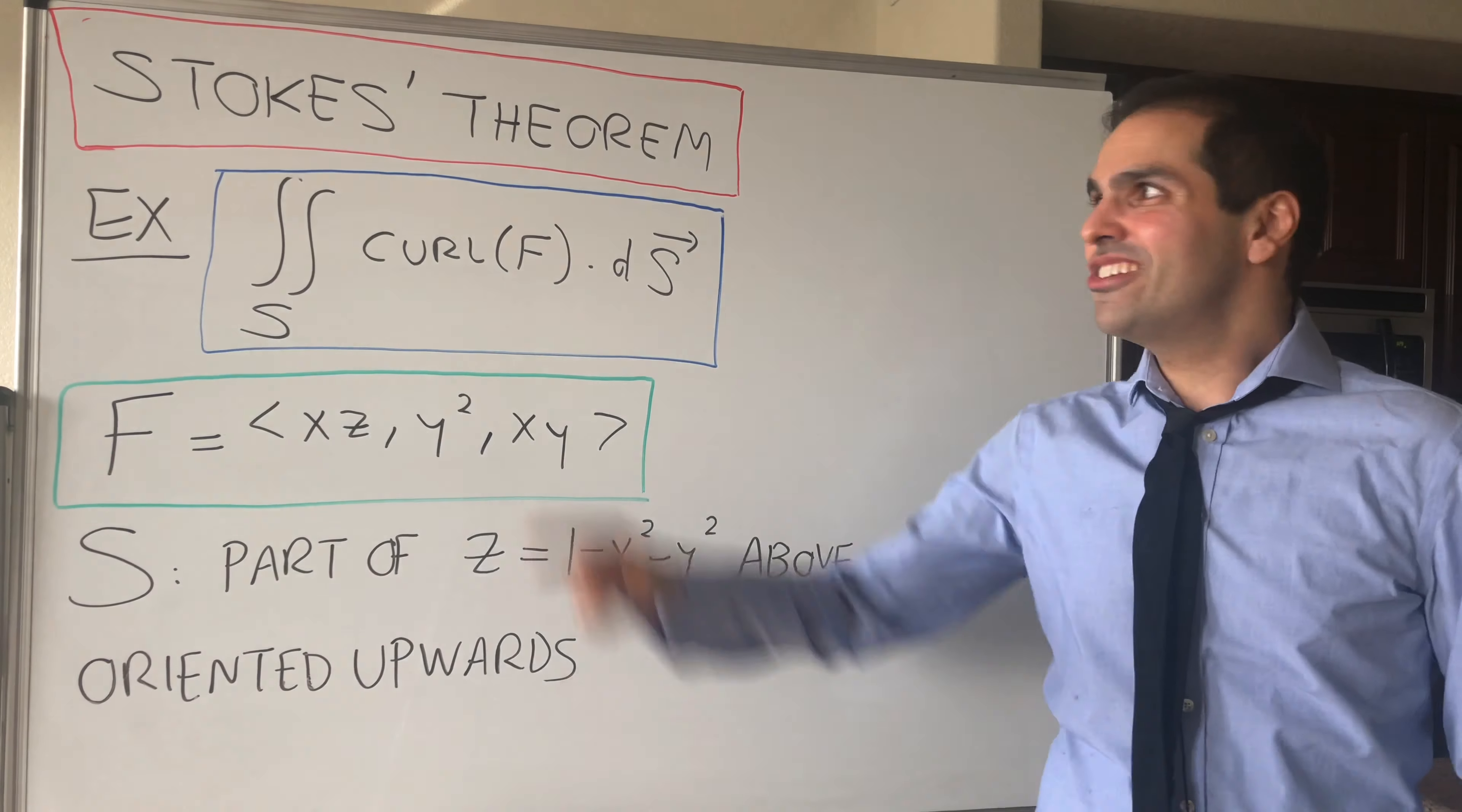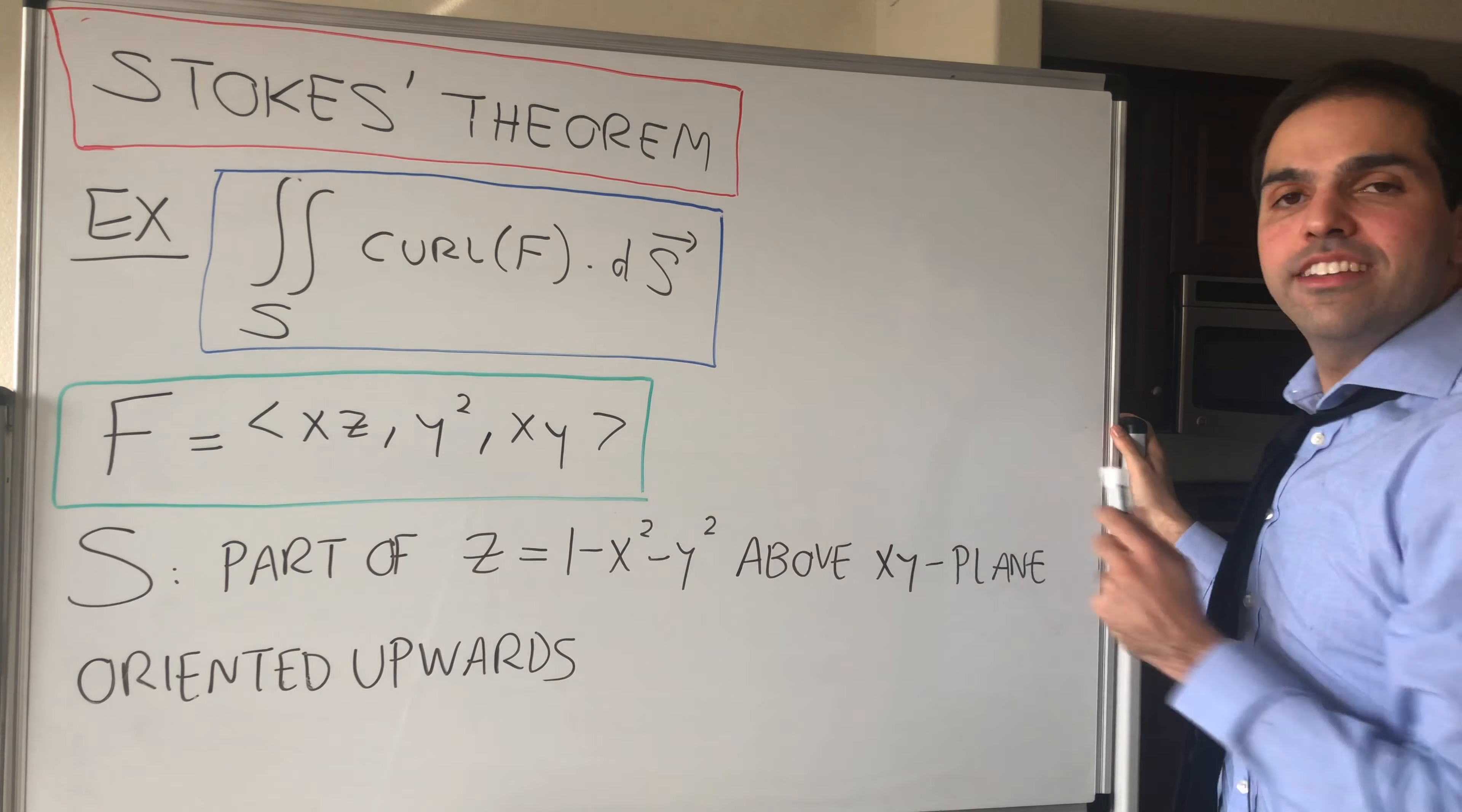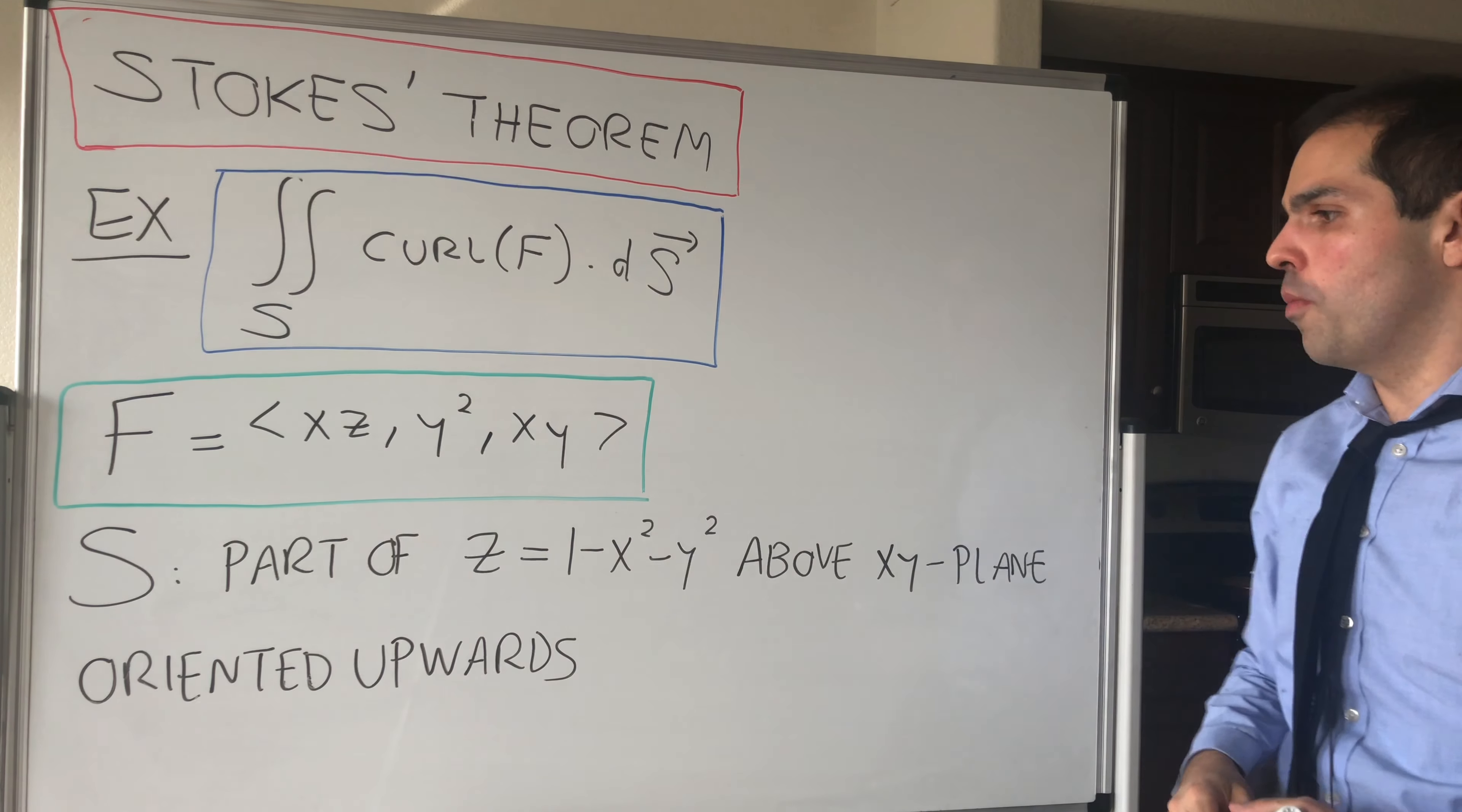All right, let's get stoked for Stokes' Theorem. In particular today, let's calculate the surface integral of the curl of F, where F is the vector field xz, y squared, xy, and S is the part of the paraboloid z equals 1 minus x squared minus y squared above the xy plane, oriented upwards.